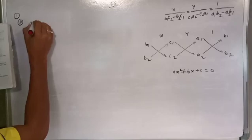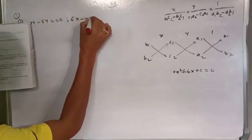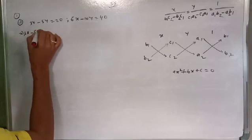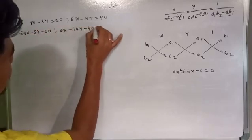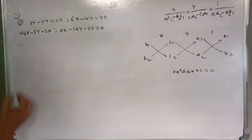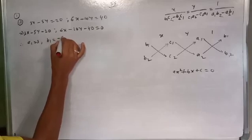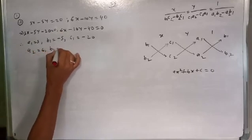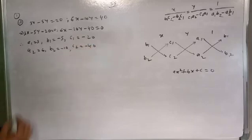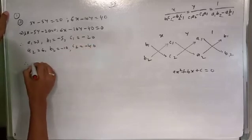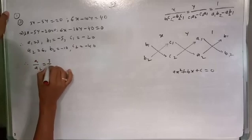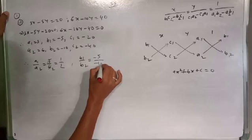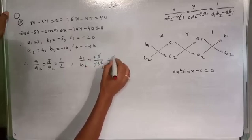The third problem gives us 3x minus 5y = 20 and 6x minus 3y = 14. This implies 3x minus 5y minus 20 = 0 or equivalently 6x minus 10y minus 40 = 0. Therefore a1 = 3, b1 = minus 5, c1 = minus 20, and a2 = 6, b2 = minus 10, c2 = minus 40.